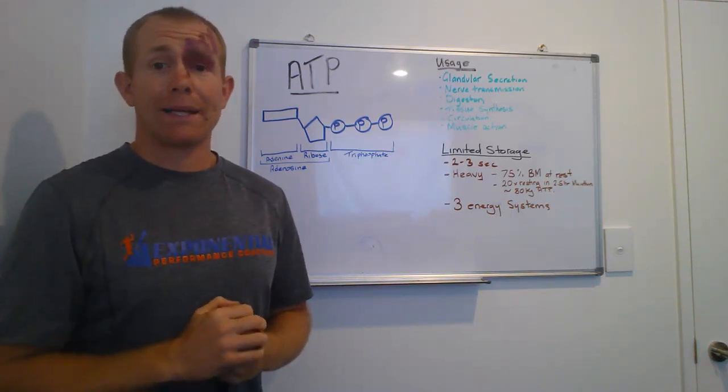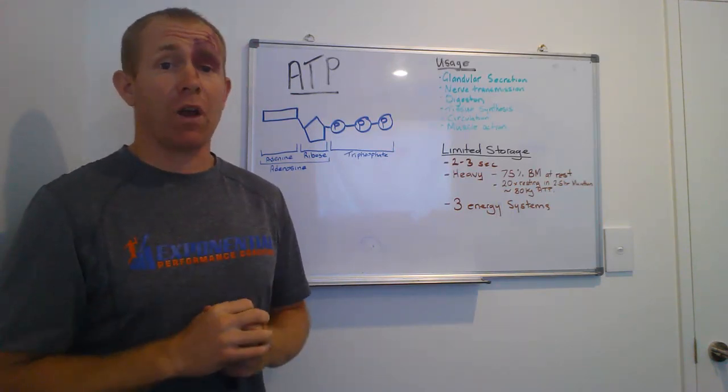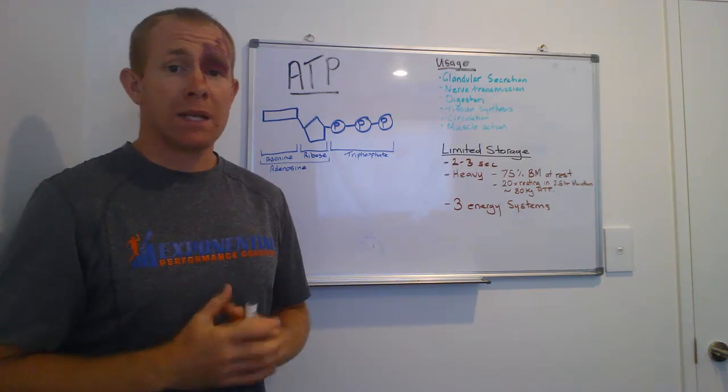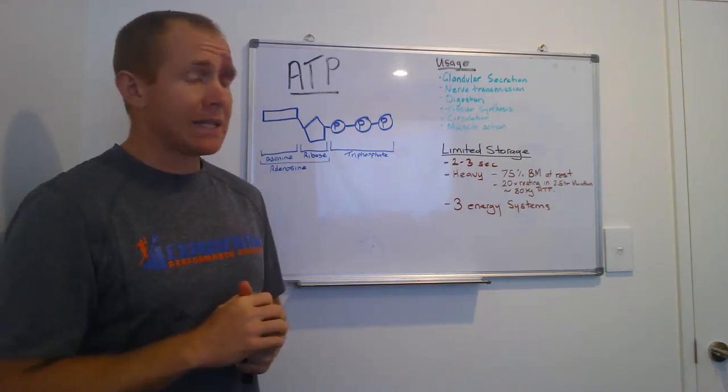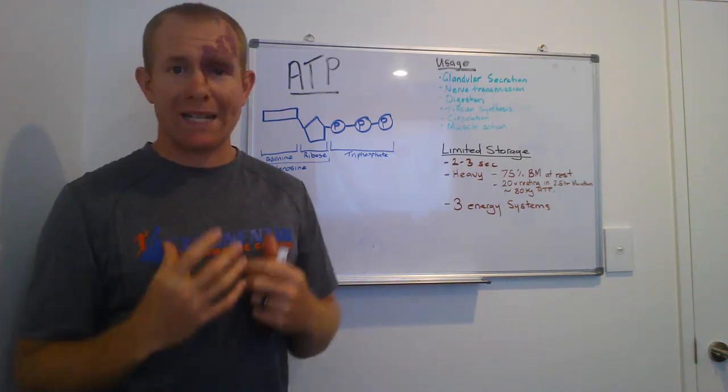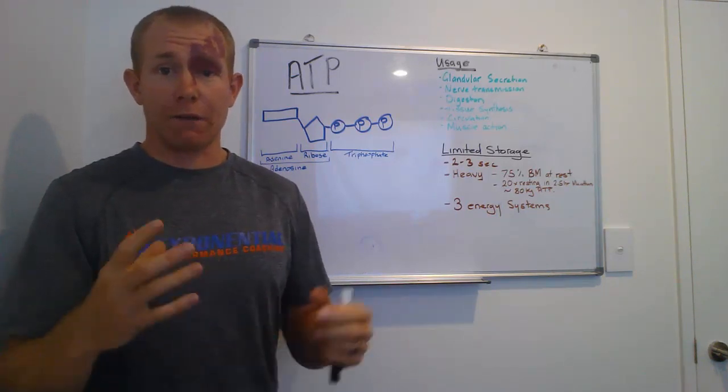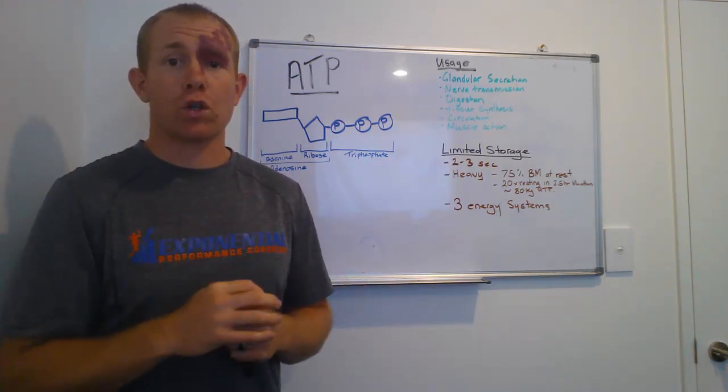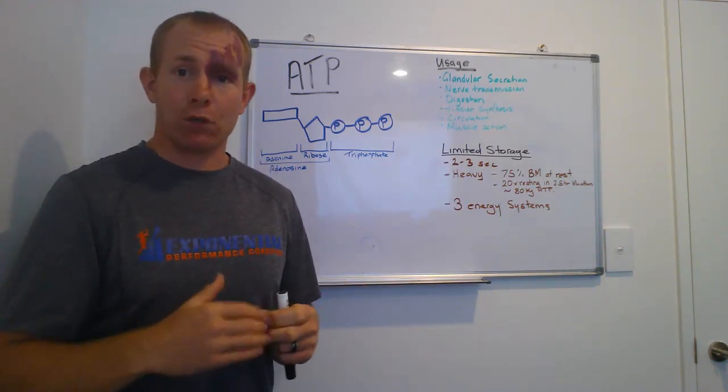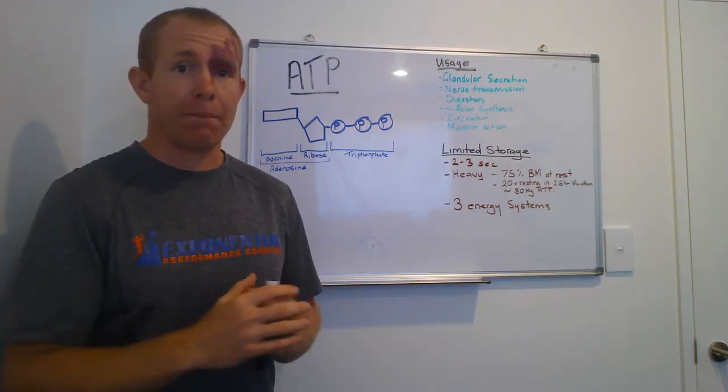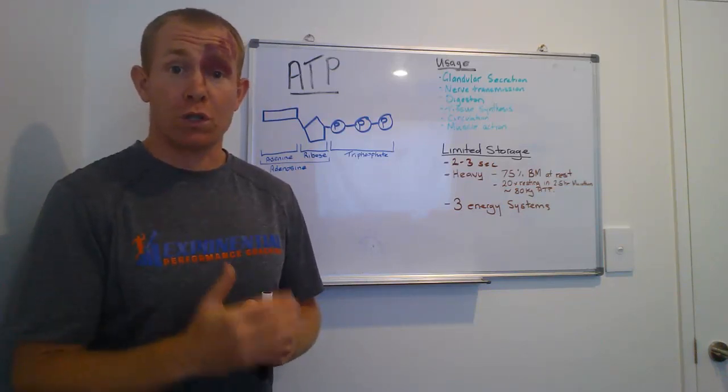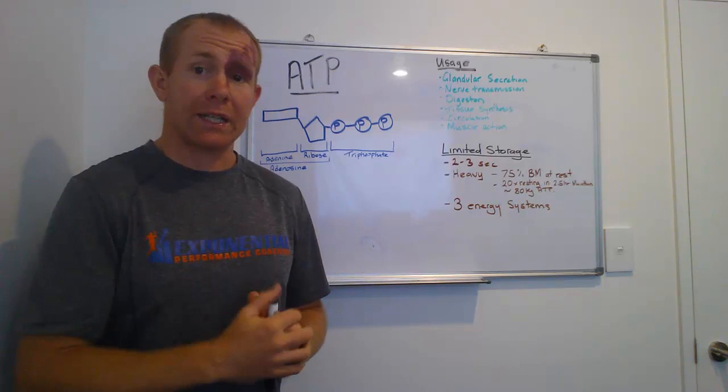So ATP is the currency, if you like, that our energy systems trade in. Now ATP is not consumed. You don't eat ATP. What we do is we eat food and then the macronutrients are broken down and it's up to our energy systems within our body to then produce ATP. And we're going to dig into that now.